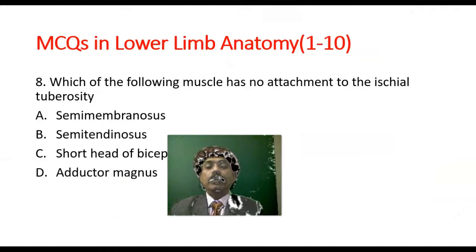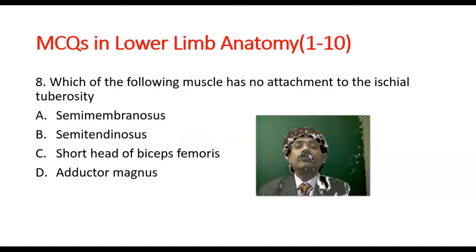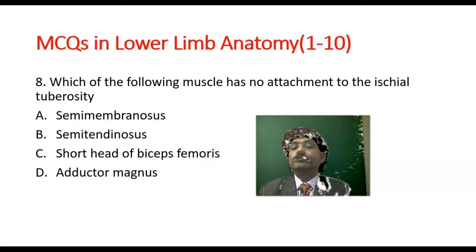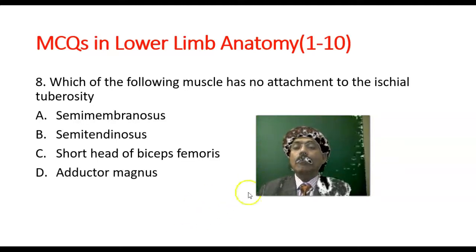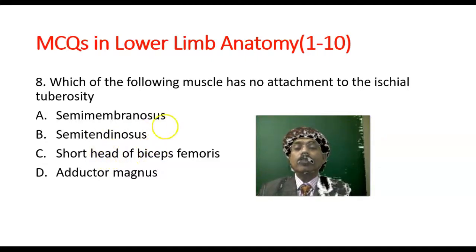Question number 8: Which of the following muscles has no attachment to the ischial tuberosity? The ischial tuberosity is the site of origin of the hamstring muscles: semimembranosus, semitendinosus, long head of biceps femoris, and adductor magnus. The short head of biceps femoris takes its origin from the linea aspera and the lateral supracondylar ridge — so the short head of the biceps femoris muscle has no attachment to the ischial tuberosity.